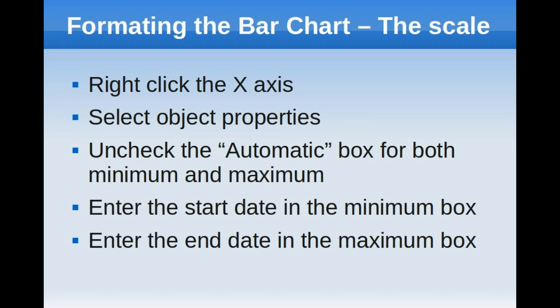The scale on which your Gantt chart is being shown is probably going to be a bit too wide, so what you want to do to fix that is right-click on the x-axis, then select object properties. Uncheck the automatic box for the minimum and the maximum values, and then enter in a start date that's close enough to the start of the first task, and an end date which is close enough to the end of the last task, and the scale will be a lot more appropriate.